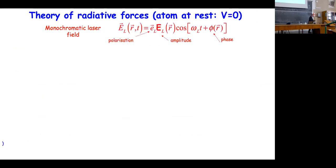Here I will give the formulas to calculate the force in all cases. The most general expression of the electric field of a light beam has an amplitude that is a function of position E_L(r), a polarization ε, a time-dependent term cosine(ω_L t) with ω_L being the laser frequency, and a phase φ(r) that depends on position. The dissipative force depends on the gradient of the phase, whereas the reactive force depends on the gradient of the amplitude.